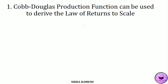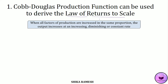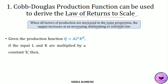The first property is that the Cobb-Douglas production function can be used to derive the law of returns to scale. We know that in the long run all the factors are variable. When all these variable factors are increased in the same proportion, the total output increases at an increasing, diminishing, or constant rate — this is called the law of returns to scale. The Cobb-Douglas production function is represented as Q = AL^α K^β.